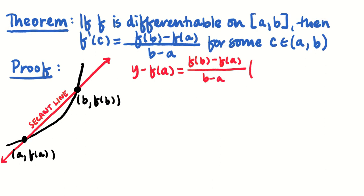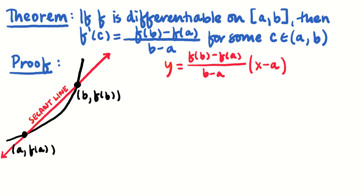Okay, slope times x minus x-coordinate. So that's x - a. But I might be a little more interested in writing this, rearranging this and writing, adding f(a) to both sides and say y equals this plus f(a). Okay, so that's the equation for my secant line.